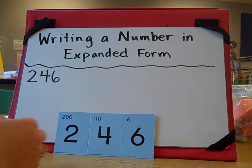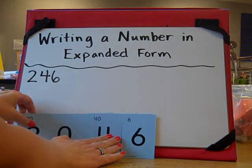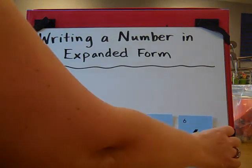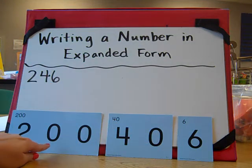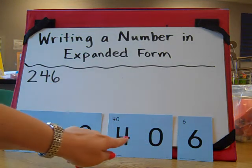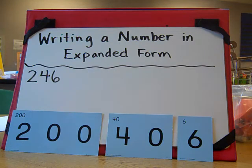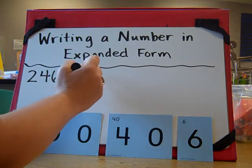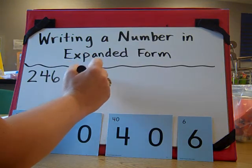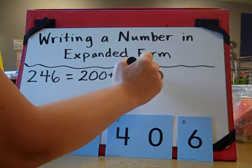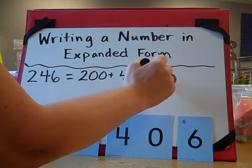If we decompose this number into its place value, we get 200 plus 40 plus 6. Second grade students learn to write the number 246 as 200 plus 40 plus 6.